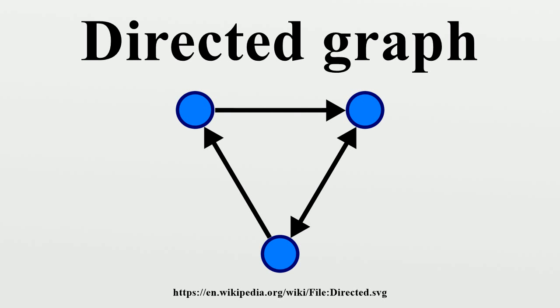A directed graph is called a simple digraph if it has no multiple arrows and no loops.